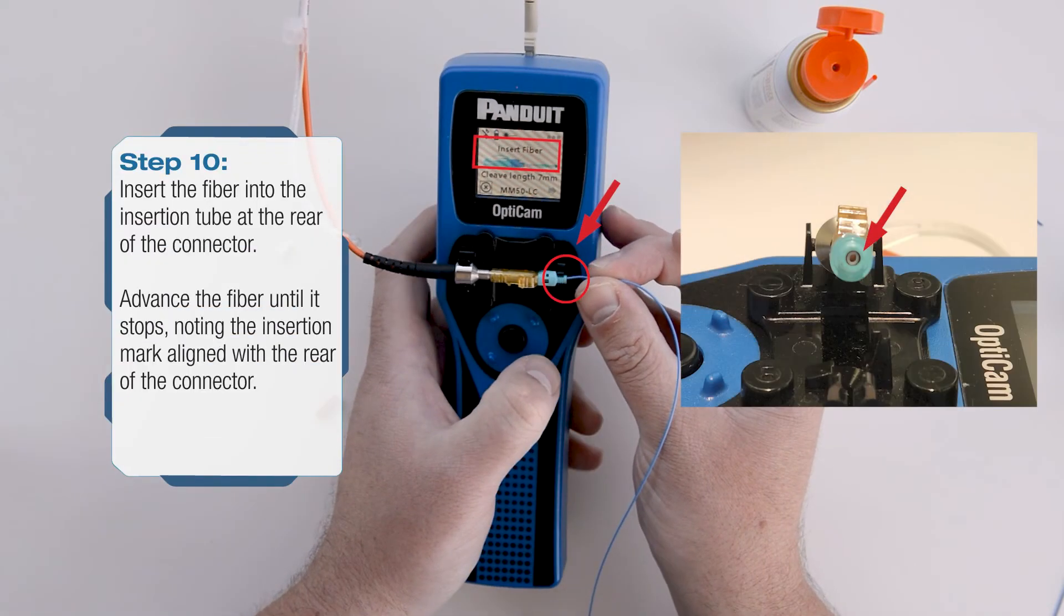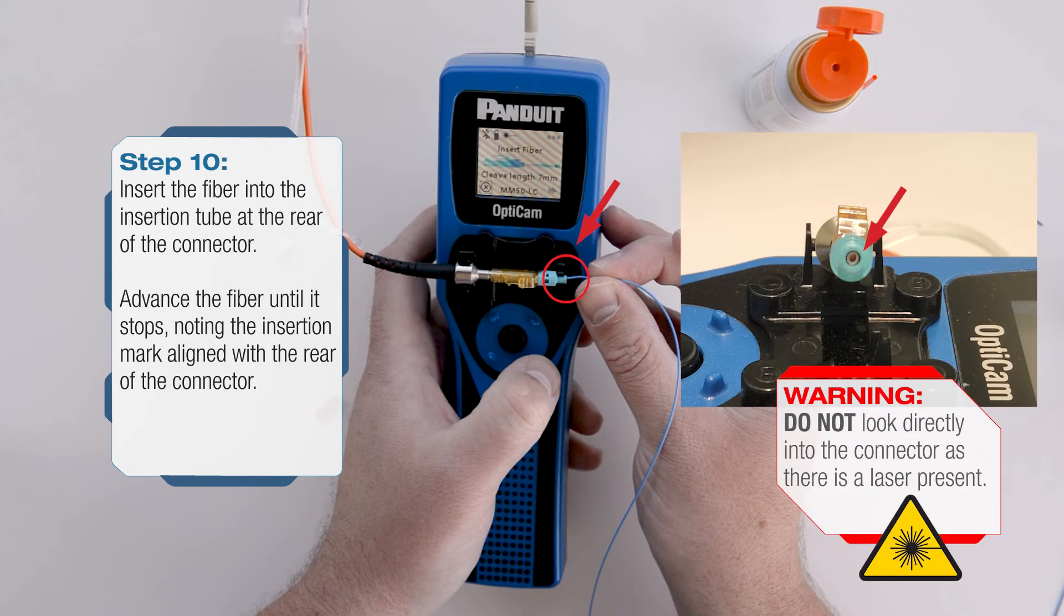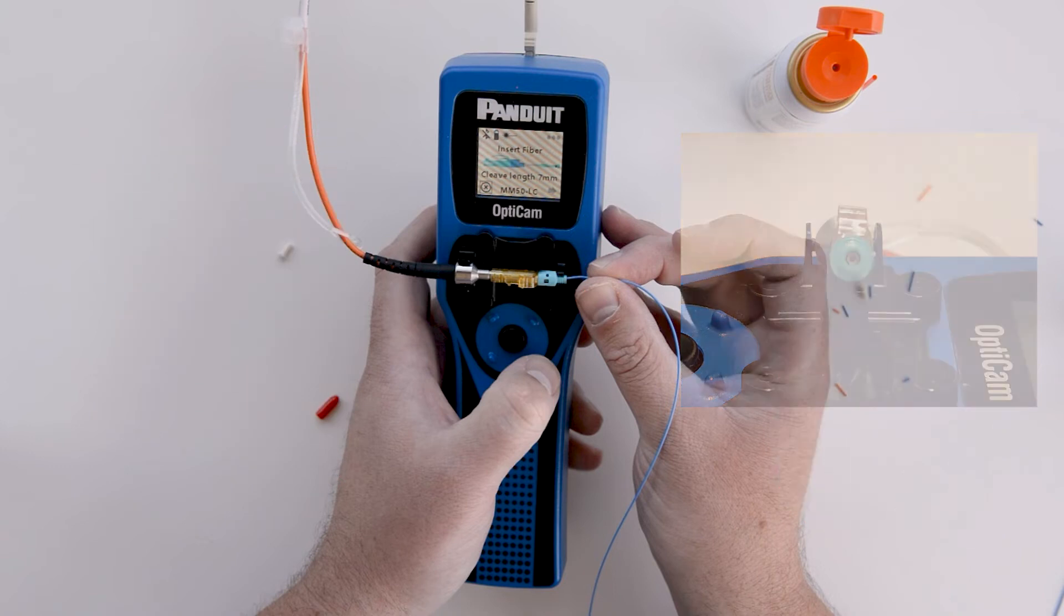Once the screen reads insert fiber, insert the fiber into the connector, ensuring that the fiber goes into the white insertion tube at the back of the connector. Make sure you are following laser safety protocols, such as not looking directly into the rear of the connector as you line up the fiber with the insertion tube. There is a laser present and activated though it is not visible.